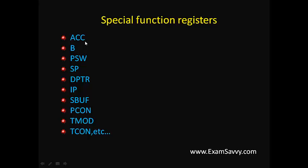ACC is the accumulator — it is an 8-bit register. It is used by default for storing the result. In many instructions it is called the destination. For example, if you perform an add operation, the result will be stored in the accumulator by default. It is shortly called ACC.